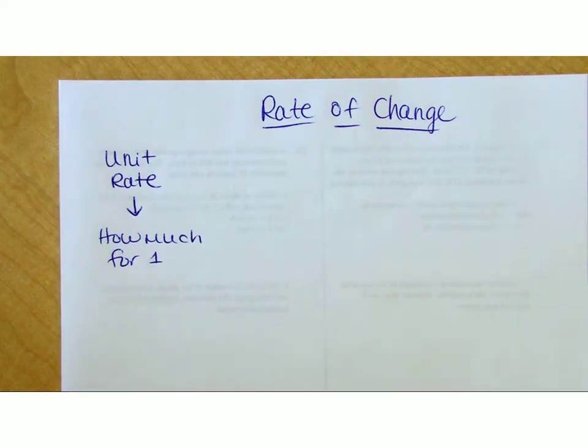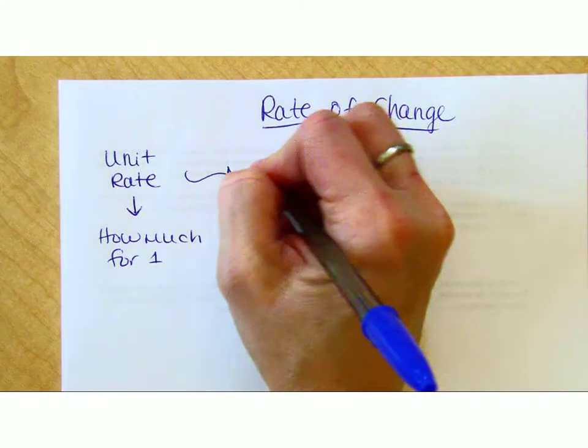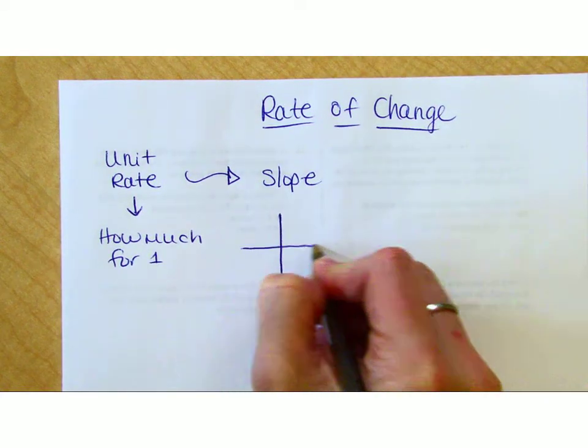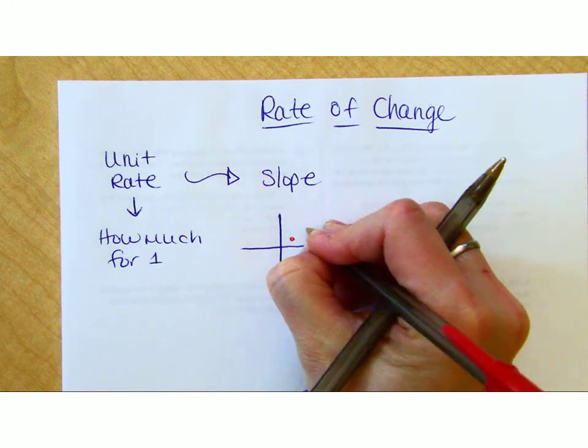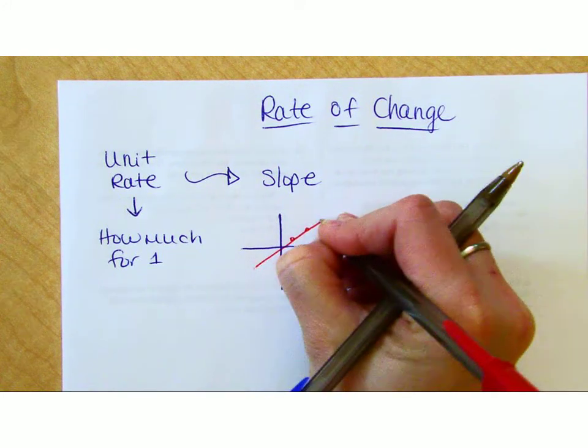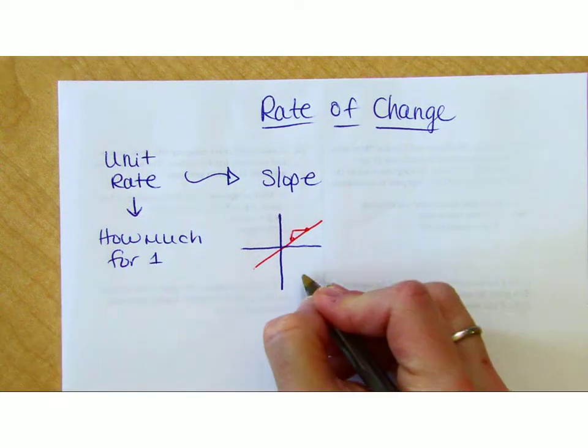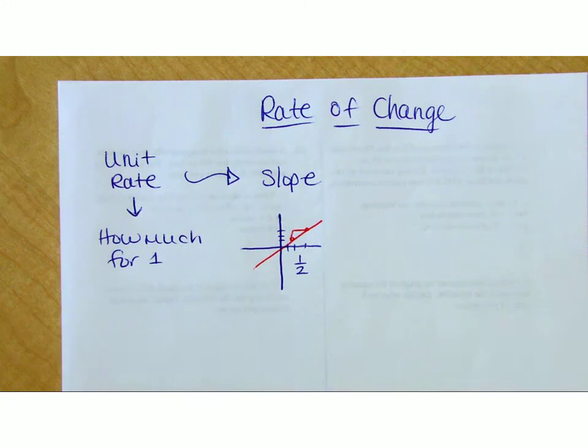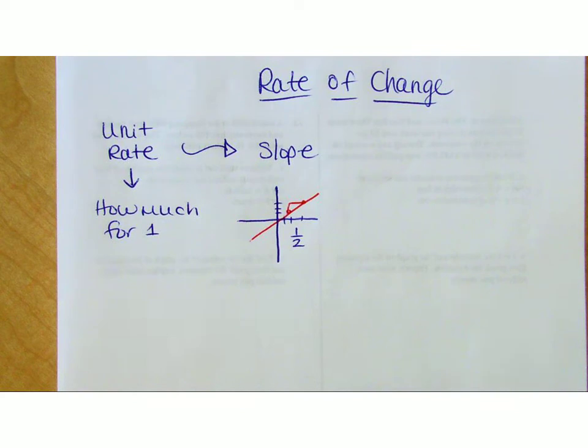And then you got into seventh grade and you started talking about slope. Slope had to do with, here's a graph, here's a point here, here's a point here. What is the slope of that line? And then it had a couple numbers here and the slope of that line is one half. Slope was just some random points on a random graph that didn't have any meaning. You just calculated the rise and the run.